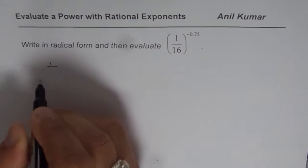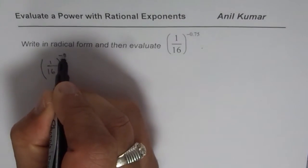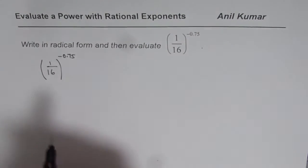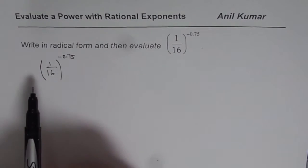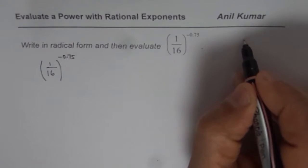The question is, you need to evaluate 1 over 16 to the power of minus 0.75. Now, it says write in radical form. So, radical form is what?